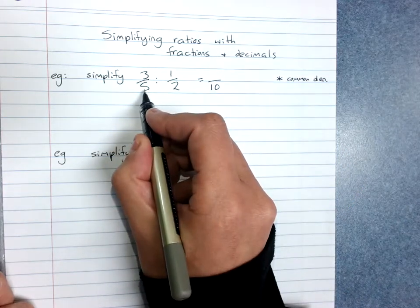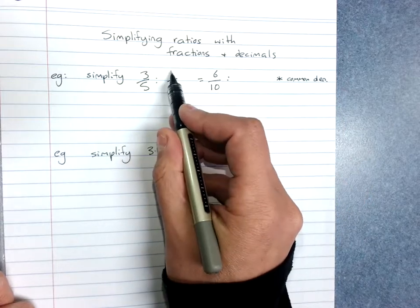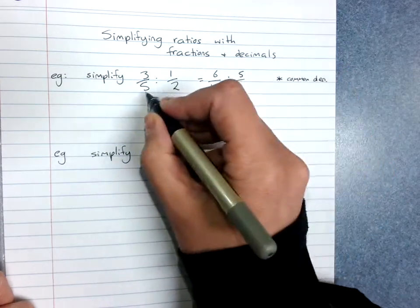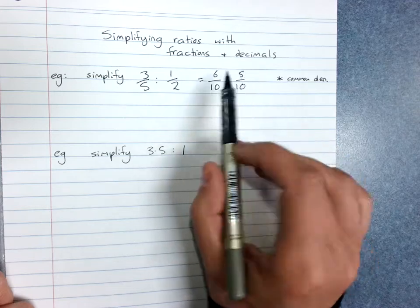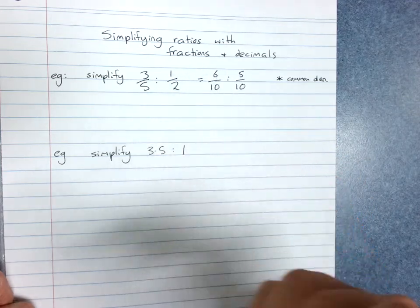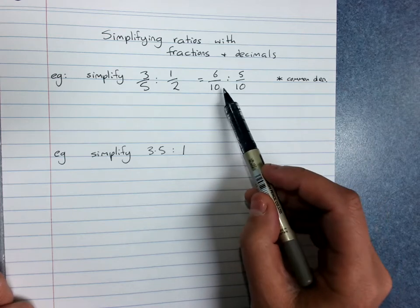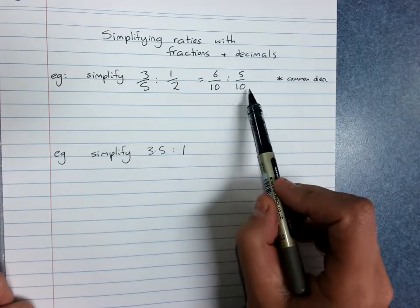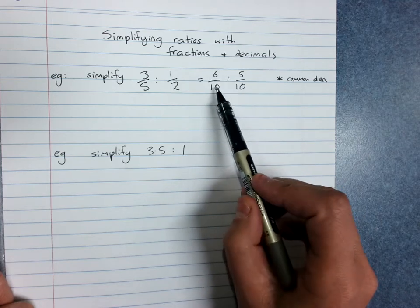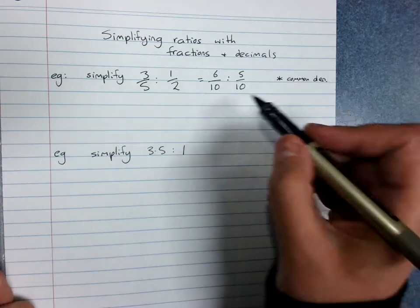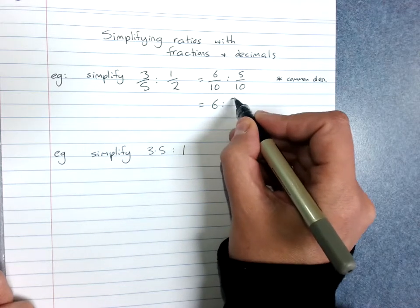5 times 2 is 10, and 3 times 2 is 6. 1 times 5, and 2 times 5 — so now we've got them both over 10. Remember when simplifying a ratio, you can multiply or divide both sides by the same thing. So if we multiply both sides by 10, we cancel out the denominators and get 6 to 5.